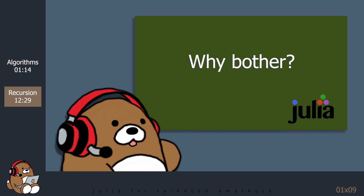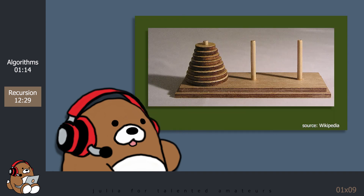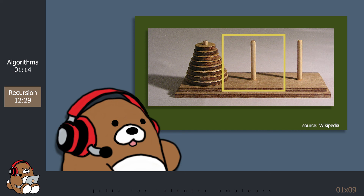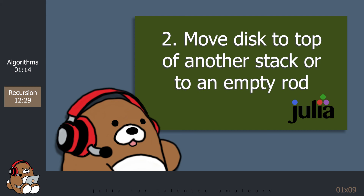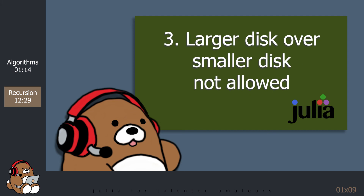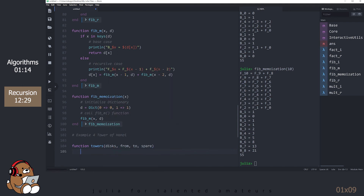The reason why recursion is important is because there are some cases where the recursive algorithm is actually more efficient. One of the most famous examples of this is the Tower of Hanoi. The puzzle starts with a stack of discs on one rod next to two empty rods. The object is to move the stack from one rod to another following these rules: only one disc can be moved at a time; each move takes the upper disc from one stack and places it on top of another stack or empty rod; and no larger disc may be placed on top of a smaller disc. The challenge is to create a function that generates a cheat sheet showing the most efficient way to solve the puzzle given the number of discs.